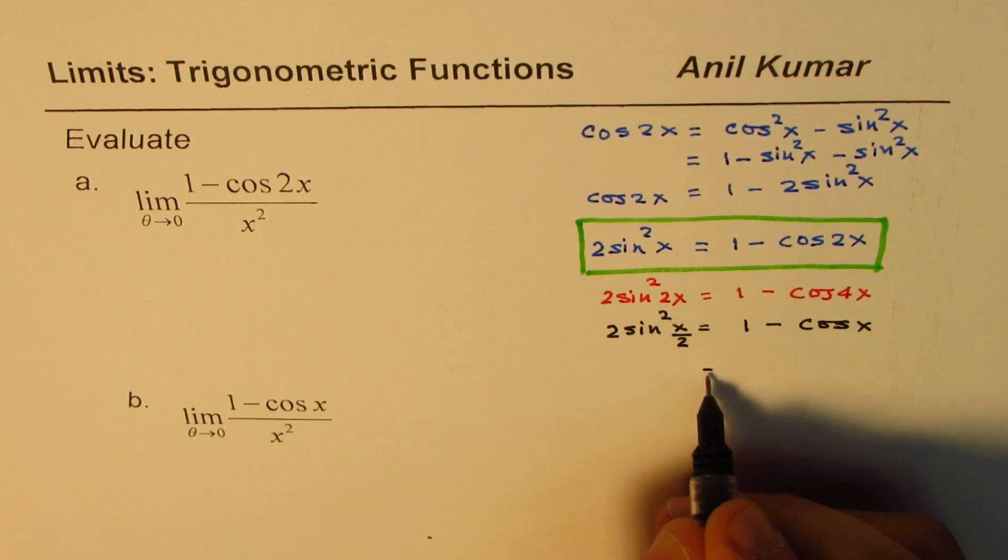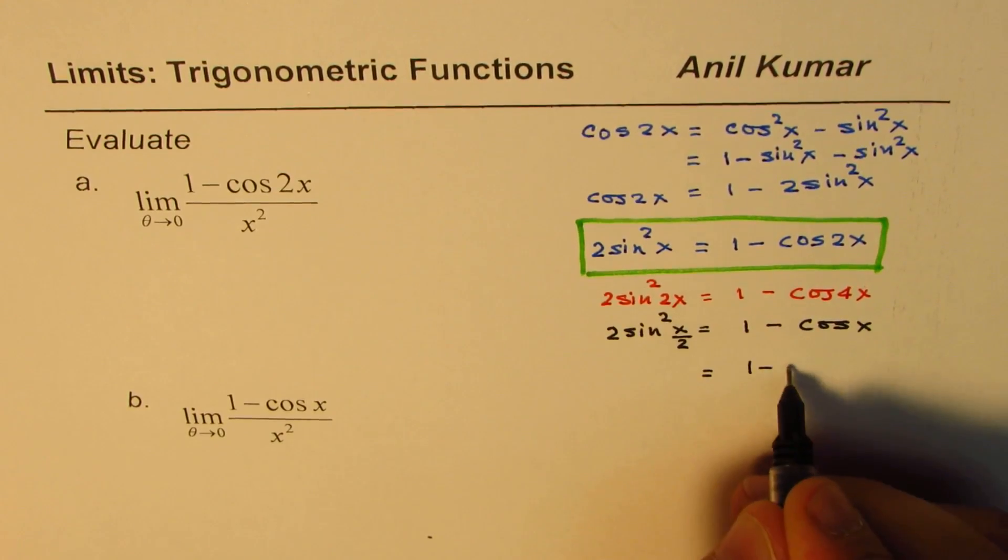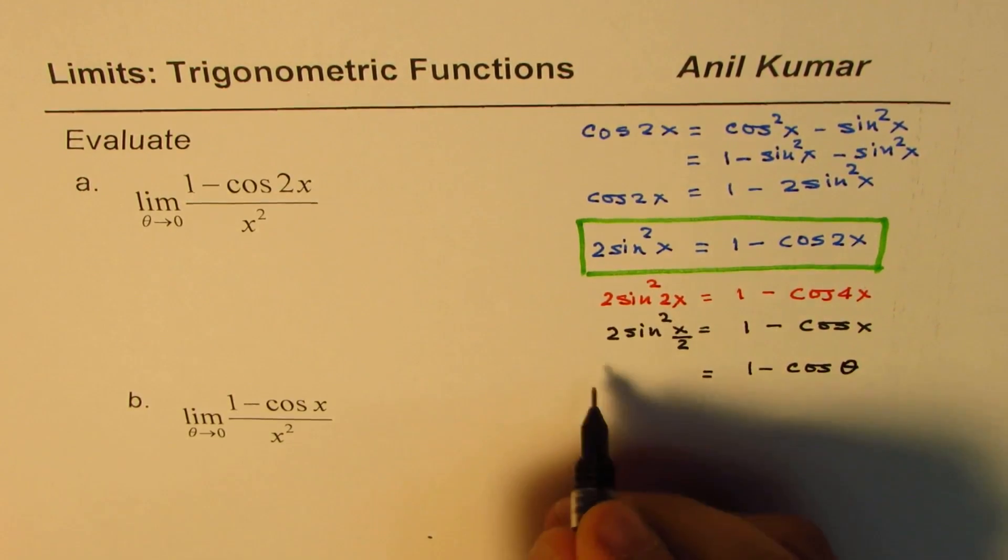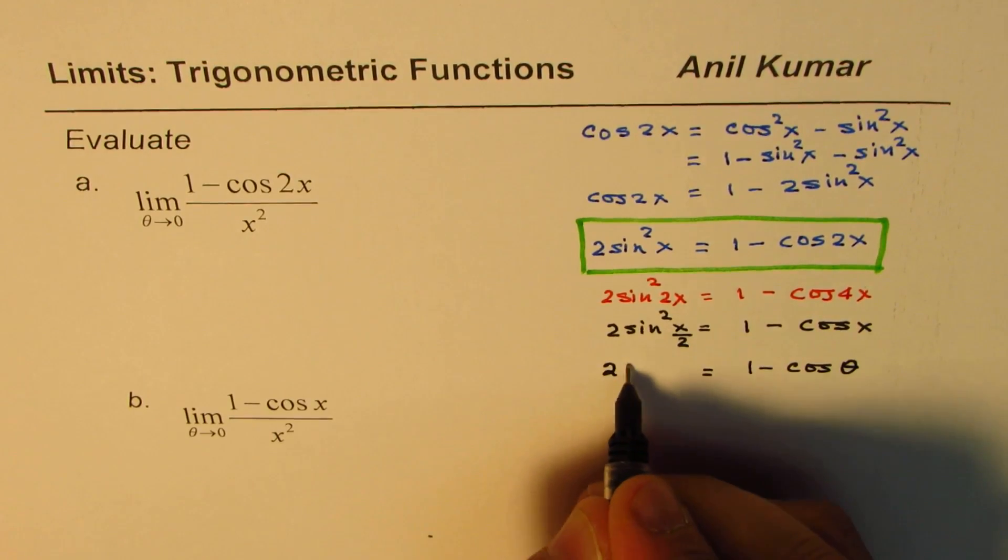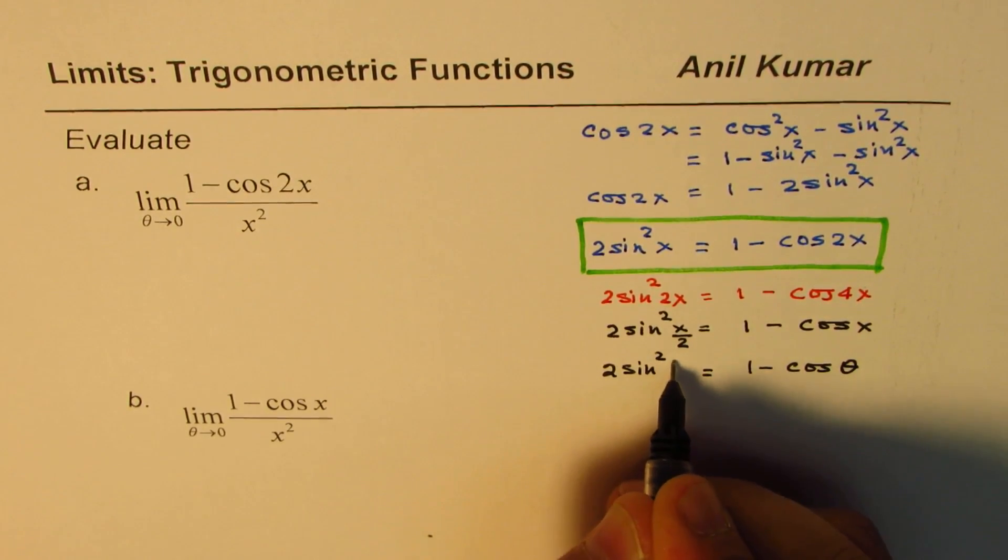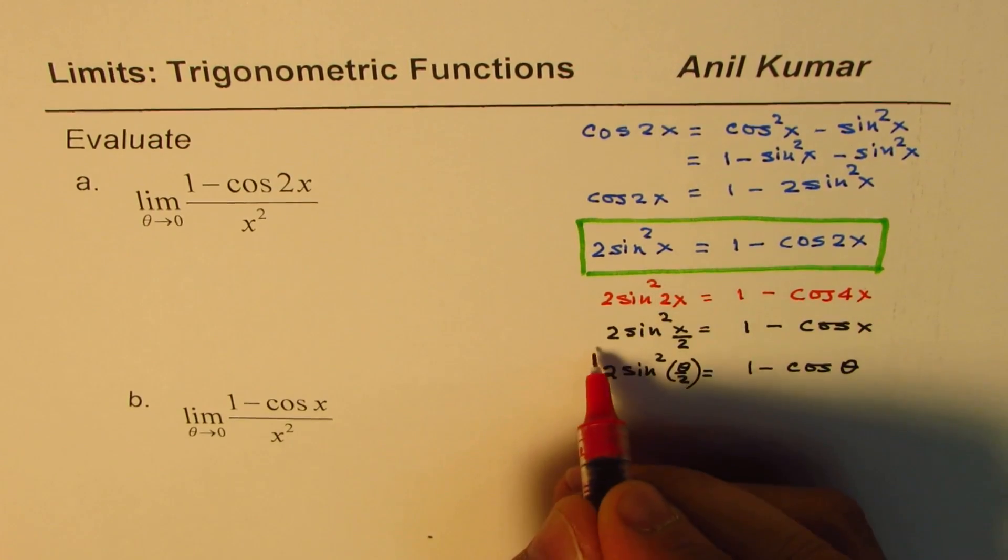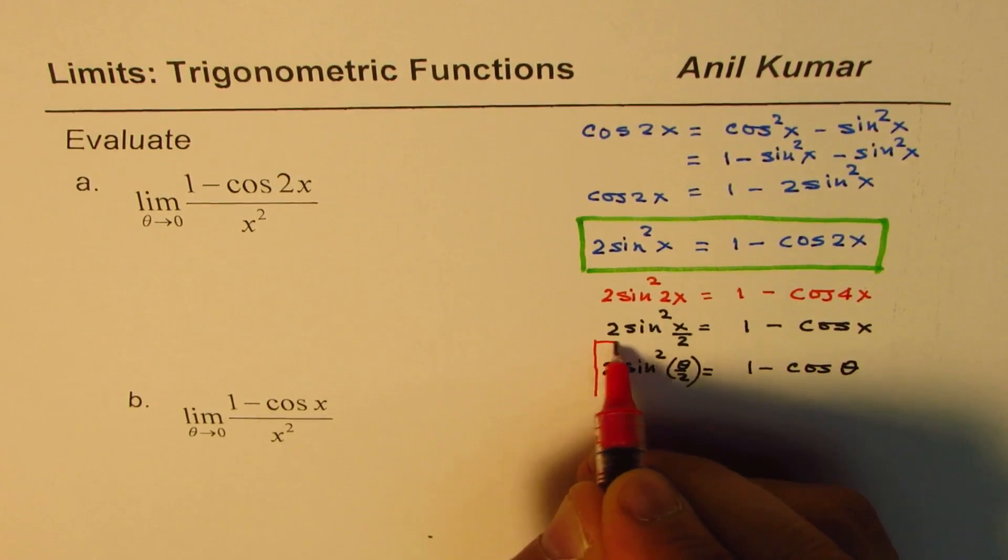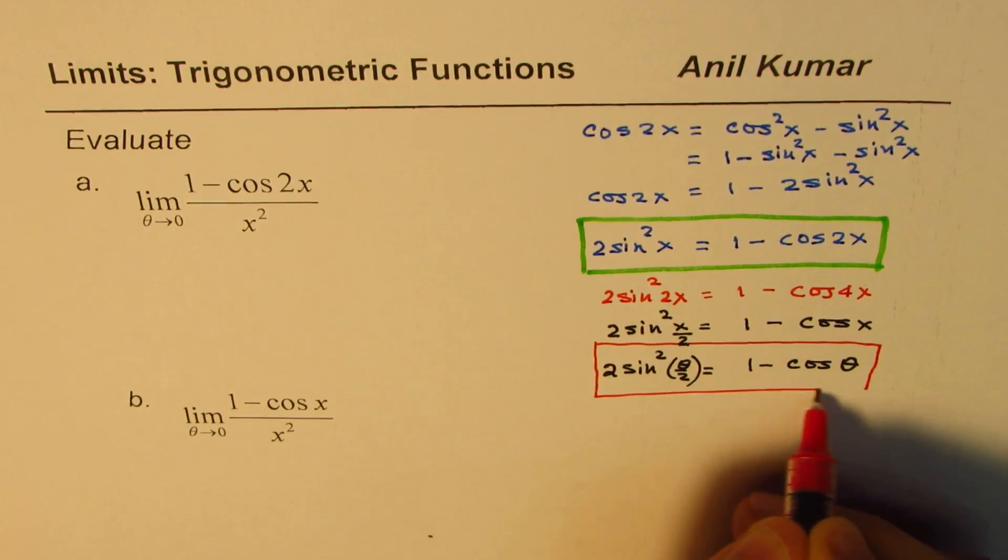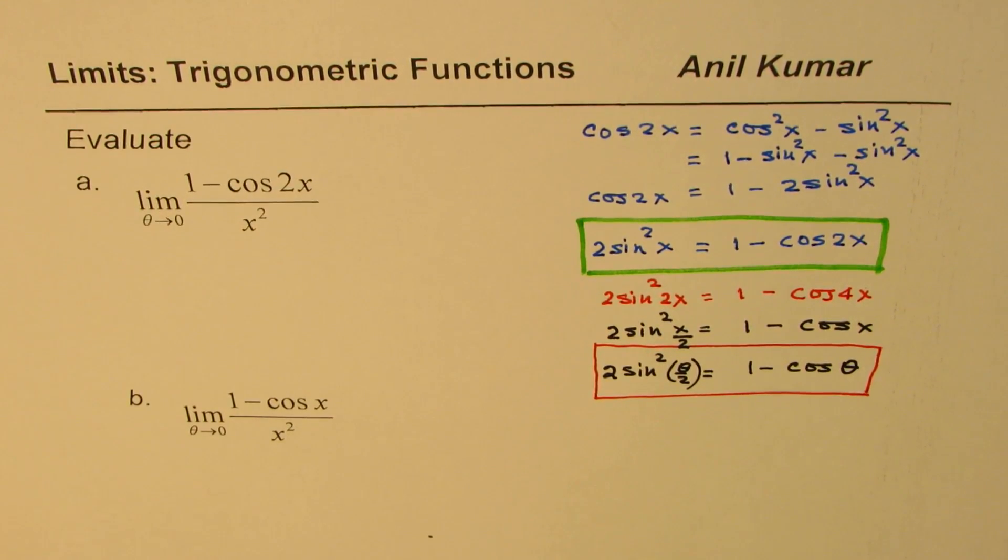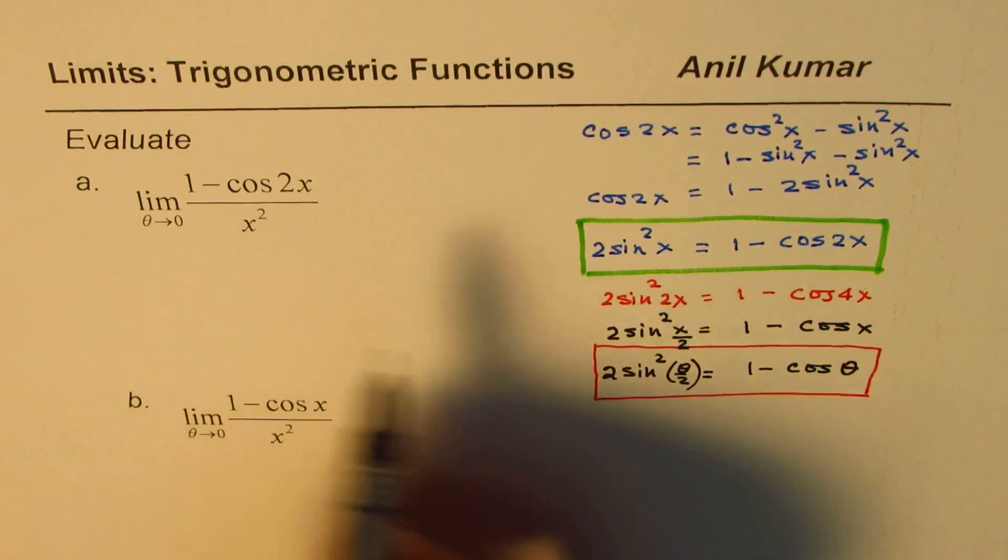I hope this point is clear. So let me make this as our basic identity, general identity. You could convert theta to half theta, half of the angle. Now that helps to find limits for such functions. Now let us see how. So I will do the first one. I will go slow. Let us understand the whole process.